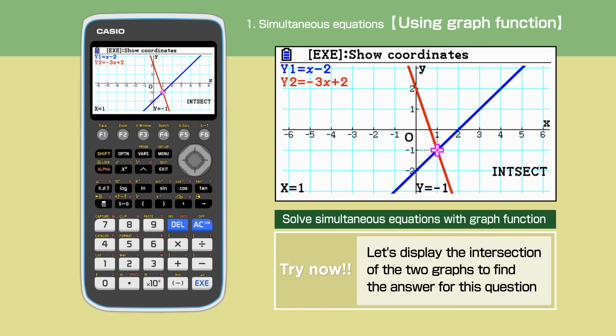The coordinates of the intersection are displayed at the bottom of the screen. The answer is X equals 1 and Y equals minus 1, which is the same as what we got in the previous example.